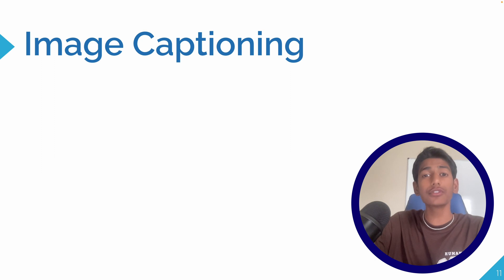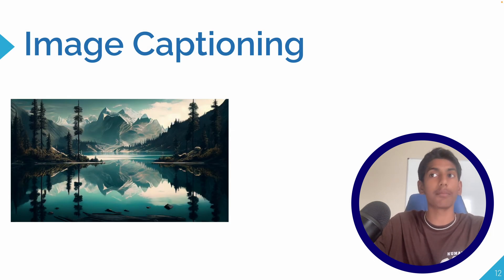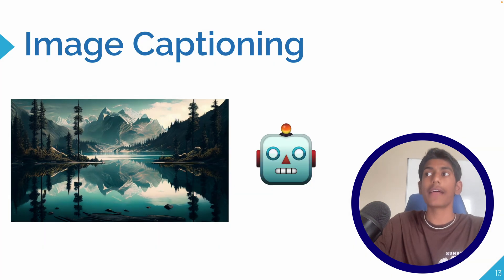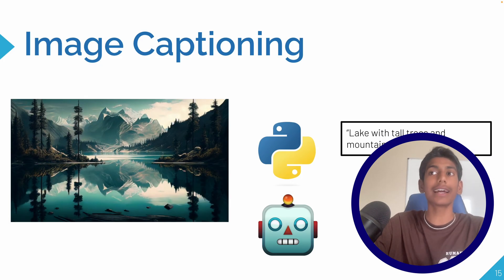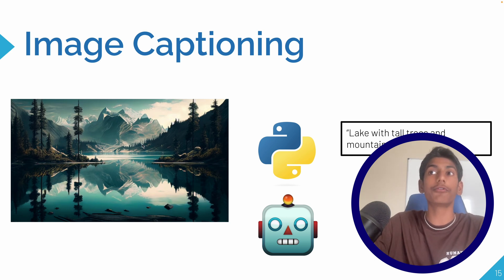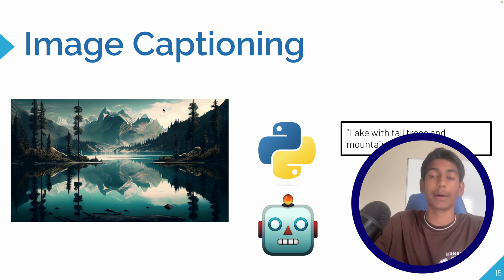For those of you that don't know what image captioning is: essentially our AI model will take in an image, and then our model — coded in Python, because we're connecting our Hugging Face model to Python — it's going to take that image, put it through the model, and then it should find all the things inside of the image. For example, if the image is a lake with tall trees and a mountain in the background, that's what it should output.